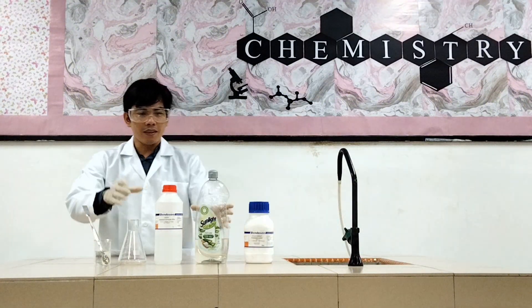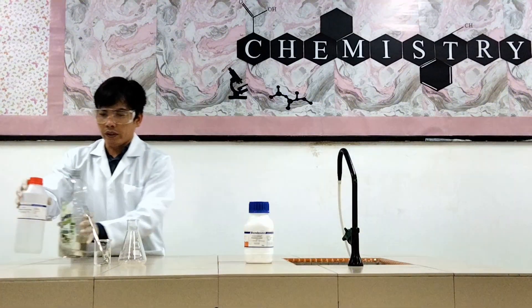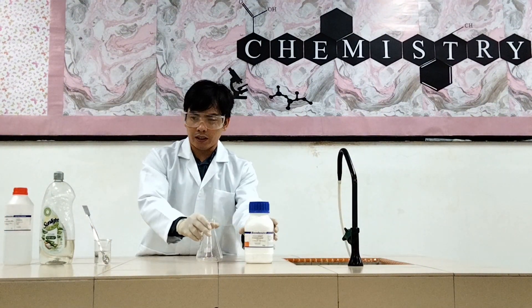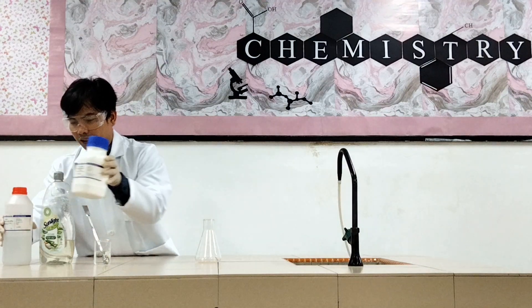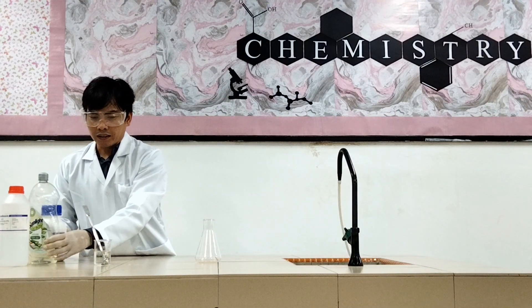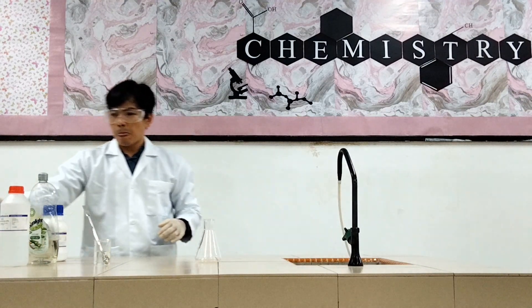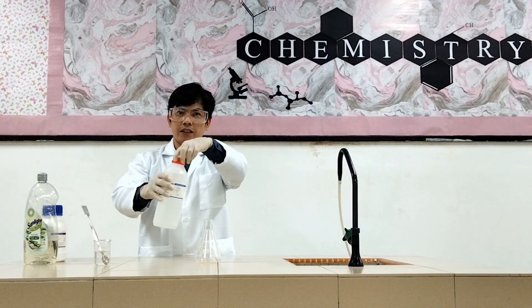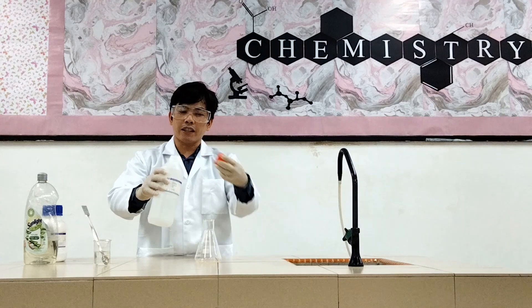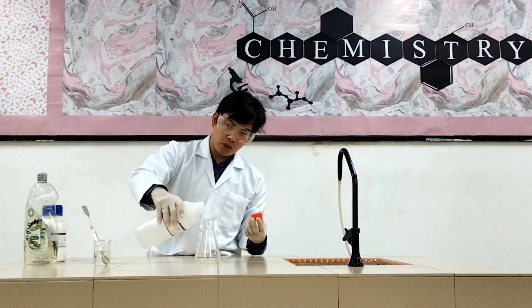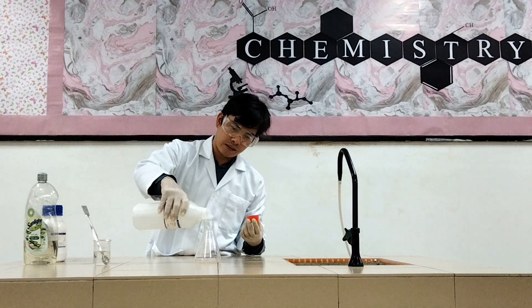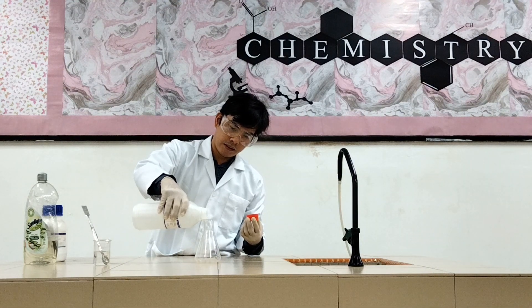So let's start. First, we need these materials. So we are going to use a glass. Let's put these things on the side. Then we are going to put the hydrogen peroxide. Be careful because it is corrosive because the concentration is quite high. Put about 25 ml of this.